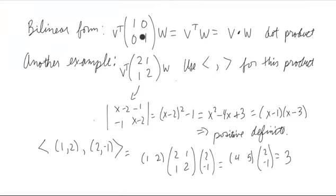That's a pretty simple bilinear form, but it works. And it's positive definite. Its only eigenvalues are just one, just has one eigenvalue, and it's positive. Here's another example, though.